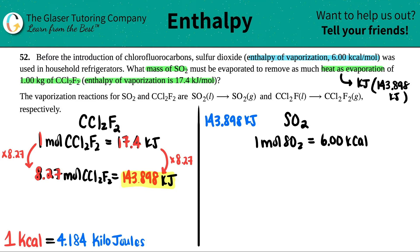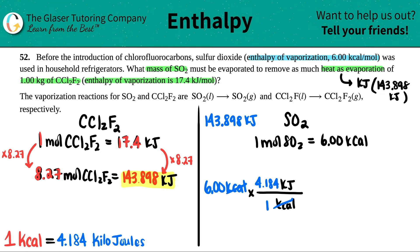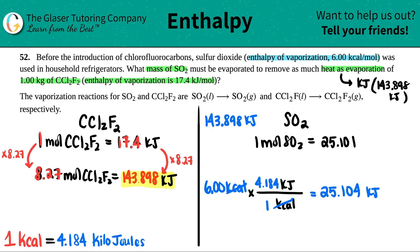Let's convert the 6 kilocalories into kilojoules. The conversion factor is: 1 kilocalorie equals 4.184 kilojoules. Starting with 6.00 kilocalories, I multiply by the ratio with kilocalories on the bottom and kilojoules on top — for every 1 kilocalorie I have 4.184 kilojoules. So 6 times 4.184 equals 25.104 kilojoules. Now for every one mole of SO2, I get out 25.104 kilojoules.